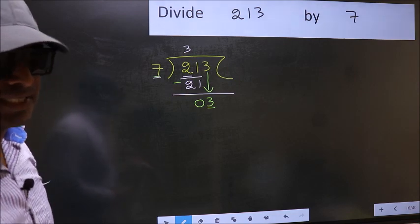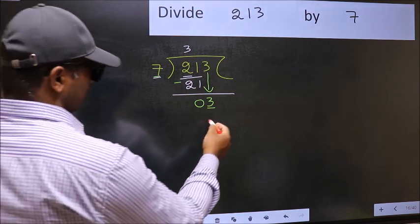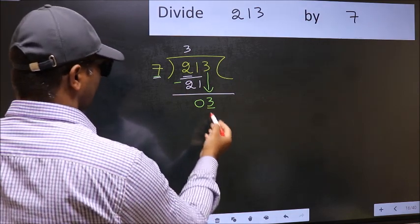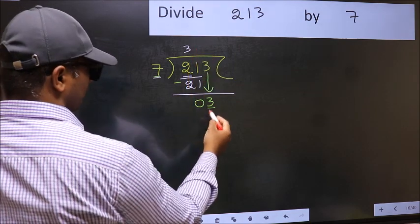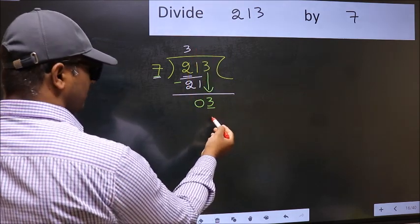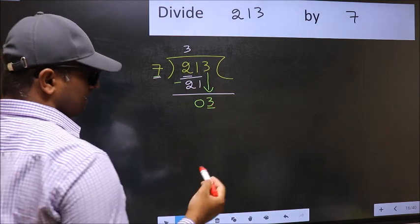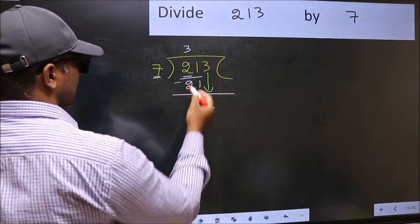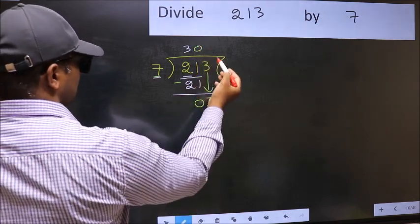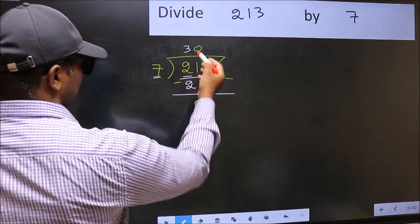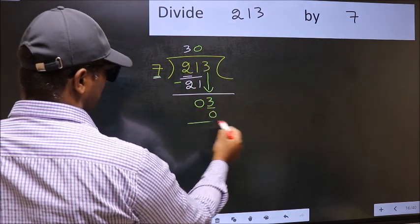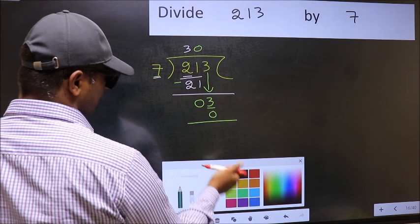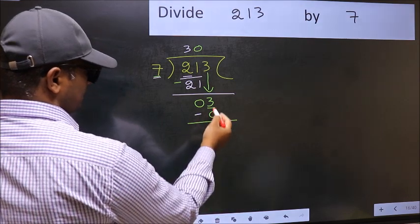what you should think of doing is, what number should we write here. If I take 1, we will get 7, but 7 is larger than 3. So what we should do is we should take 0. So 7 into 0, 0. Now you should subtract. 3 minus 0, 3.